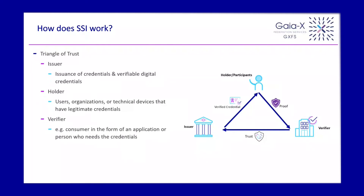We have on one side the issuer, we have a verifier, and we have a participant or a holder. The issuer issues credentials to the holder. The credentials are presented later on to the verifier, and the verifier can prove it and can decide later on if the issuer was trustworthy or not. That is what we have currently, in the direction of the trust framework, with the trusted services API — designed to establish exactly this triangle of trust to realize the SSI concept.